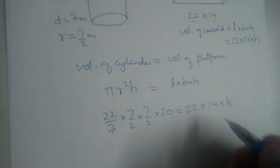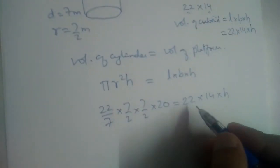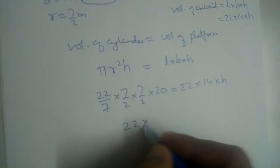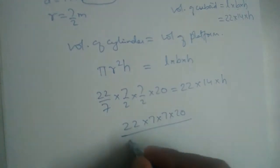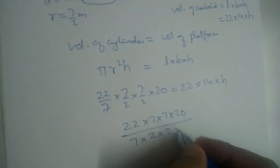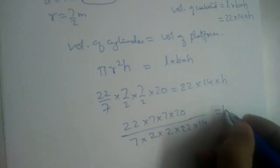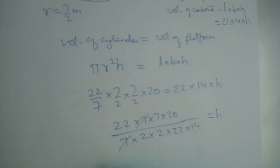From here we should find the value of h. Let us send this 22 into 14 to the other side, they will come to the denominator. In the numerator we have 22, 7, 7 into 20, and in the denominator 7, 2 into 2 into 22 into 14. Let us carefully cancel: 7 and 7 will get cancelled.